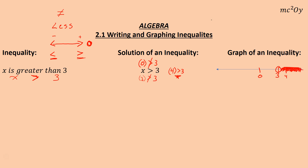We're shading over our solutions — anything bigger than 3 is a solution, and that's what the shading implies on the right-hand side. Notice the greater than symbol points to the right. So as long as your variable is on the left and we read left to right, the symbol tells you which way to shade. This symbol points to the right, so we shade to the right.